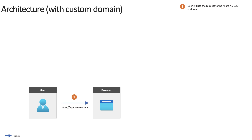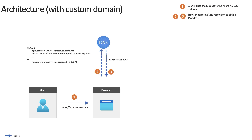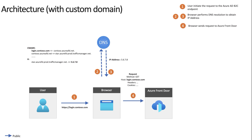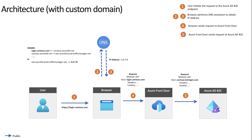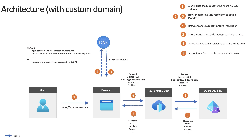Now let's take a look at the request-response cycle with custom domain enabled through Azure Front Door. The user sends a request to the Azure AD B2C endpoint with the custom domain — login.contoso.com. The browser makes a DNS resolution to get the IP address for this domain, which points to Azure Front Door. The browser sends a request to Azure Front Door, which forwards it to Azure AD B2C. Azure AD B2C processes the request and sends the response back through Azure Front Door to the browser.